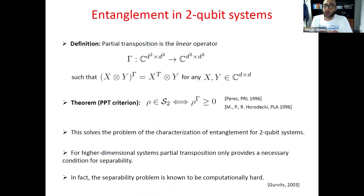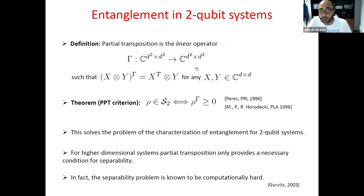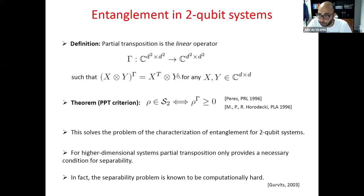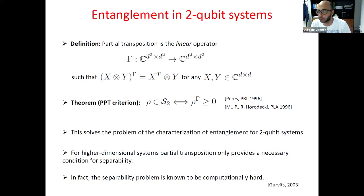The first question one has to deal with in entanglement is whether a given density matrix is entangled. This problem has already been solved in the case of two-qubit systems. We can characterize the set of separable density matrices as those having a positive partial transposition. Partial transposition is the linear operator that acts on matrices of size d-squared by transposing the first factor and leaving the other factor untouched. The famous PPT criterion tells us that a two-qubit density matrix is separable if and only if after partial transposition it remains positive semi-definite.